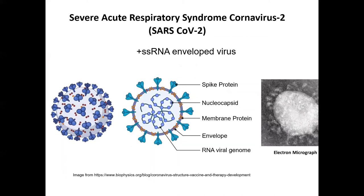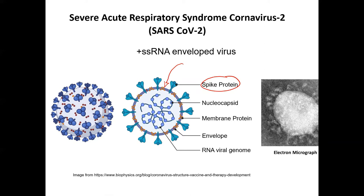COVID-19 stands for Coronavirus Disease 2019. The International Committee named the virus SARS-CoV-2, which stands for Severe Acute Respiratory Syndrome Coronavirus 2. It is an enveloped single-stranded RNA virus. It has these spike proteins, which are important when talking about the vaccine because that's what our immune system interacts with - the best vaccine candidate. Coronavirus means 'crown' - whoever discovered it noted it looked like little jewels on a crown.